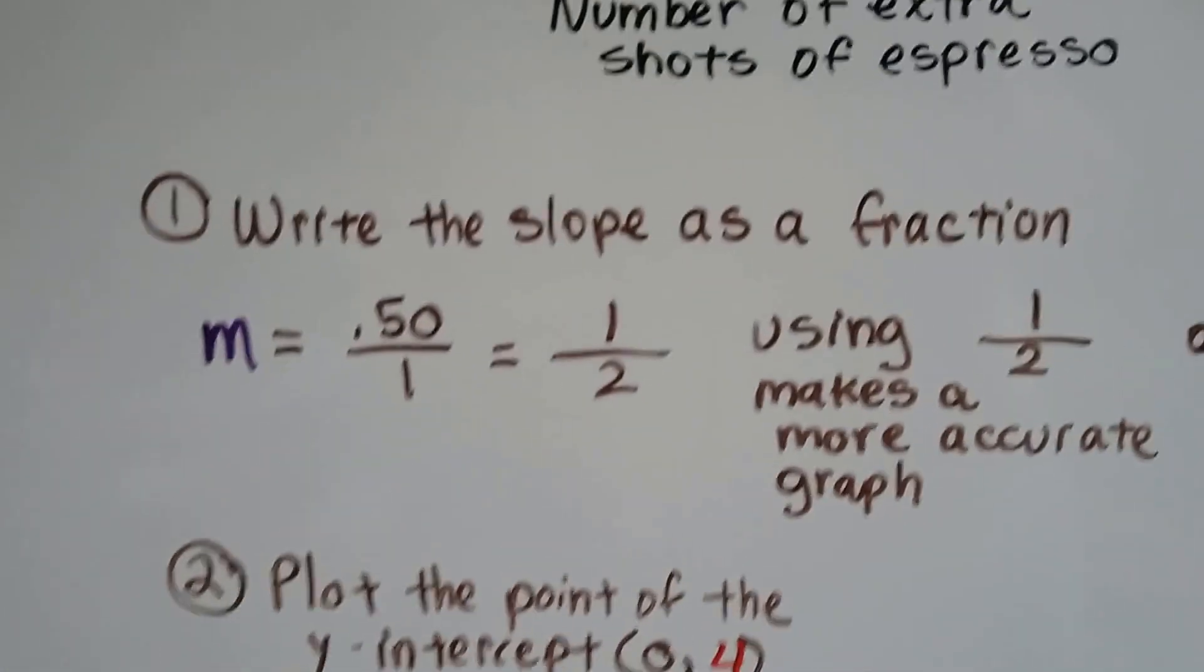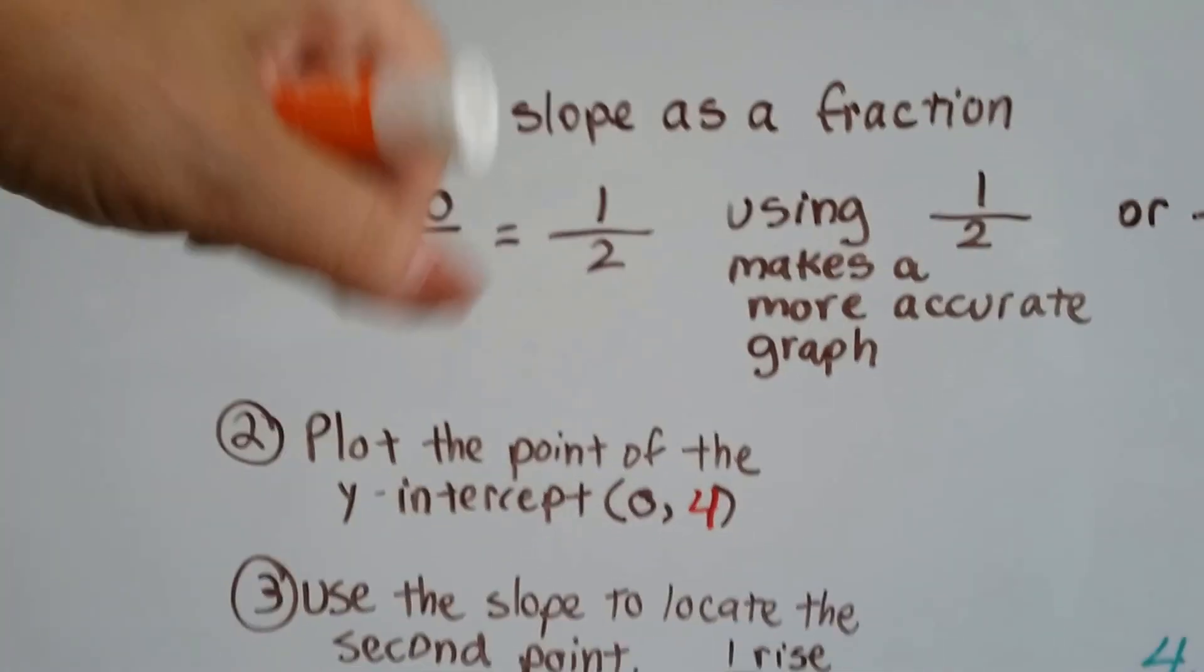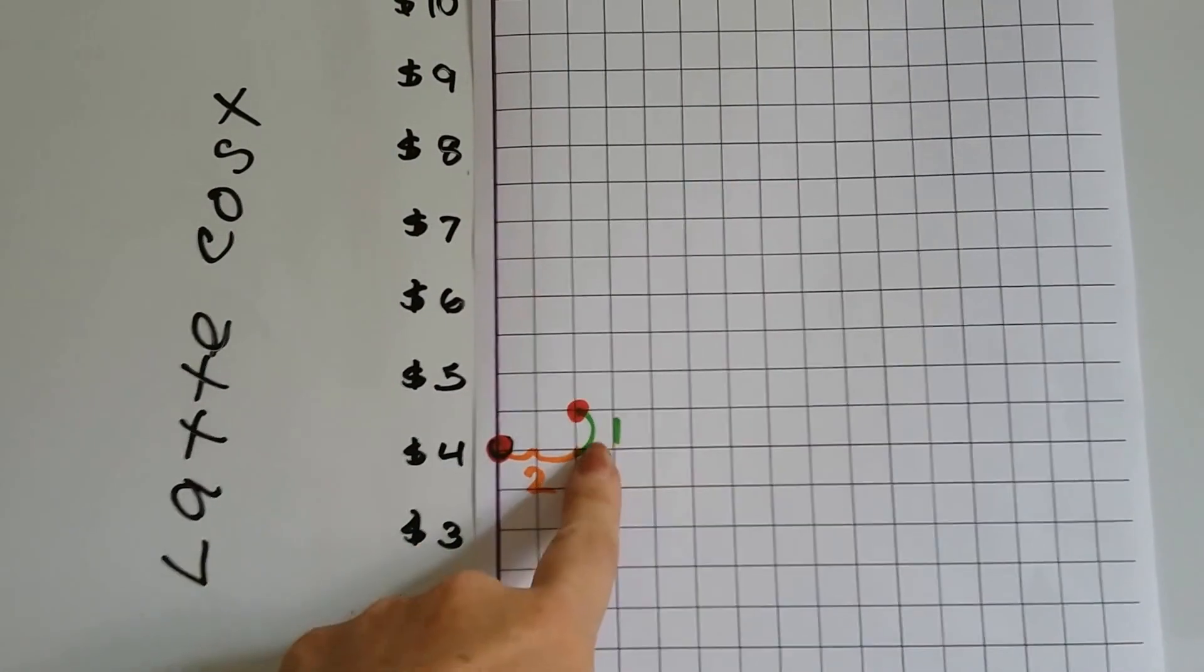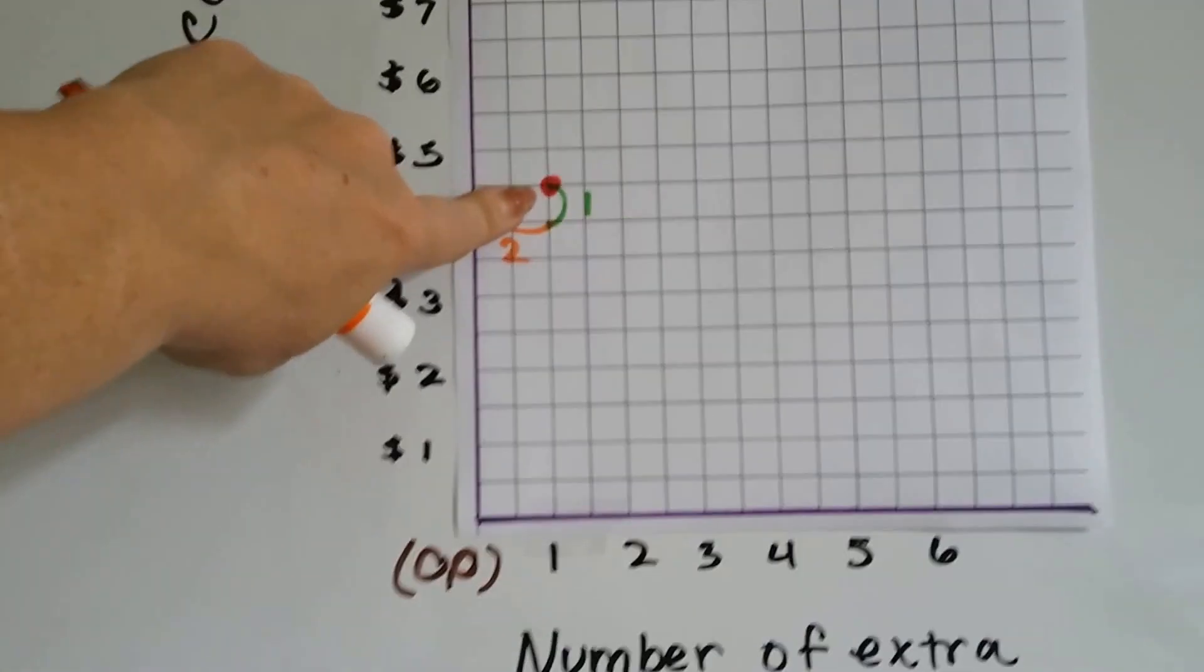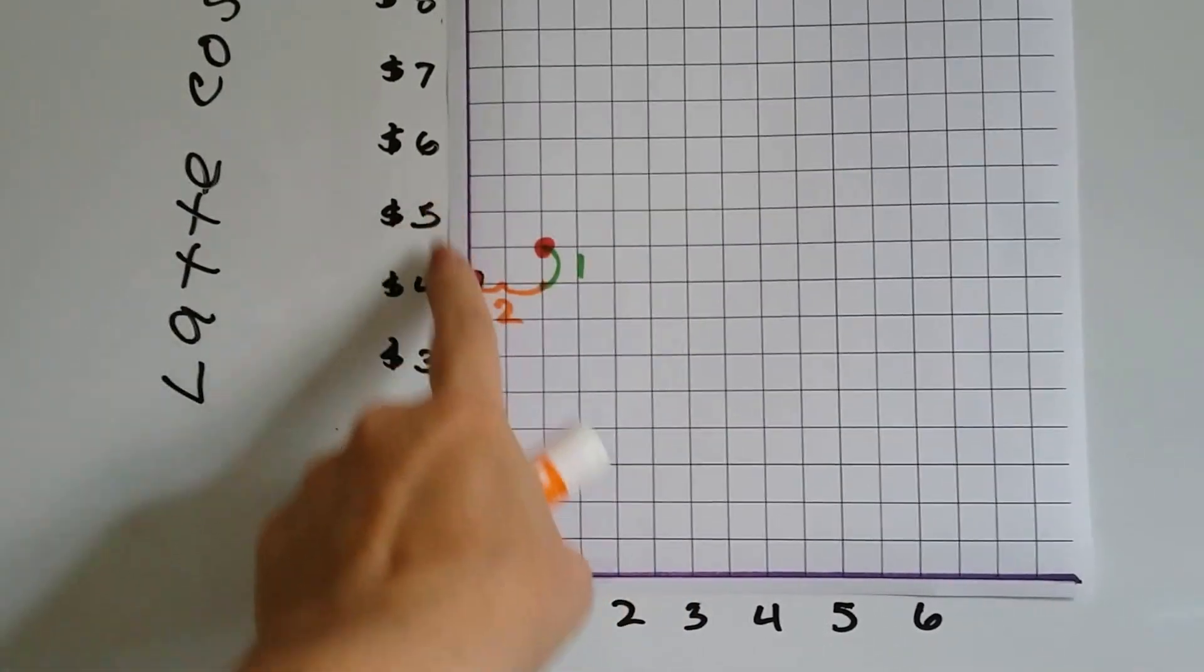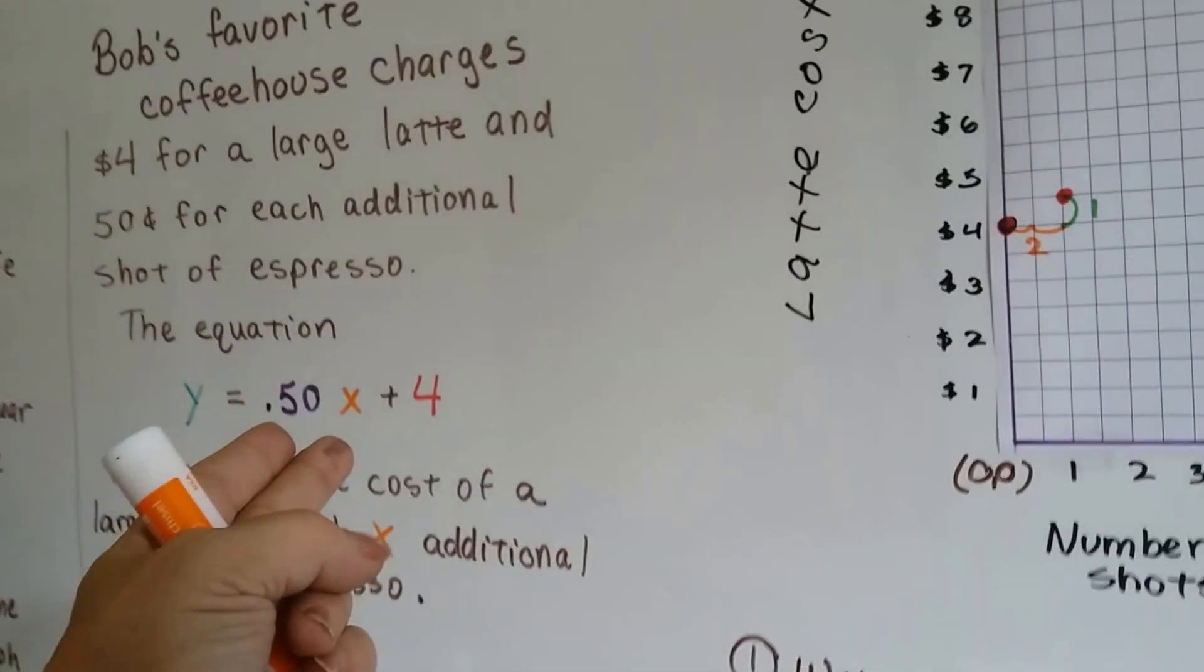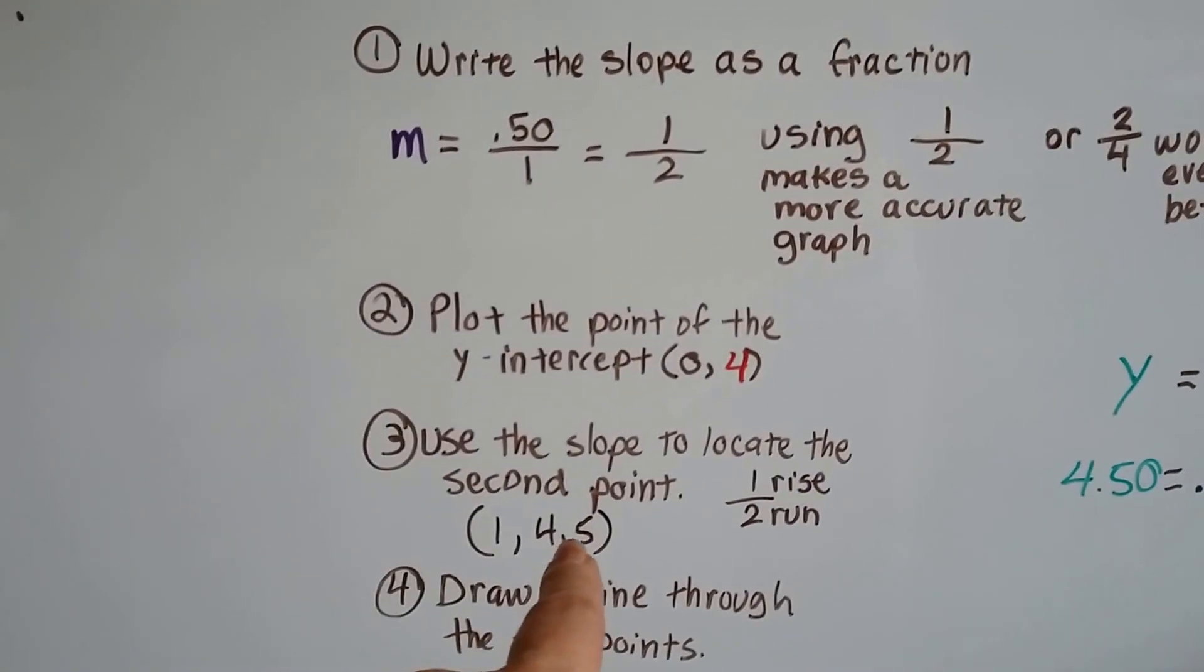We use our rise of 1 and our run of 2 to plot the second point. We go up 1 and we go over 2. That puts us at 1 and 4.5, in the middle of 4 and 5, so $4.50. One shot would be $4.50, which makes sense because it's $4 for the latte and $0.50 for an extra shot.